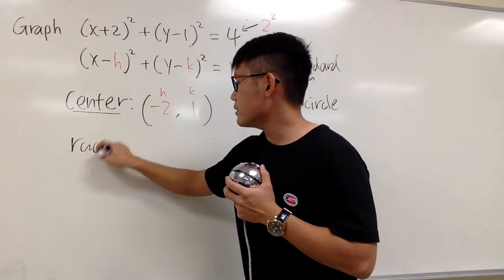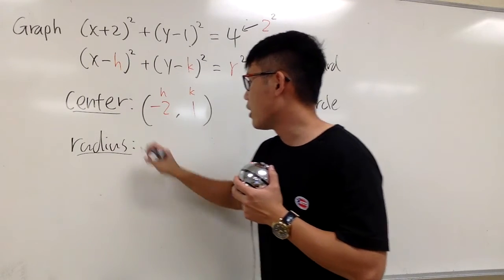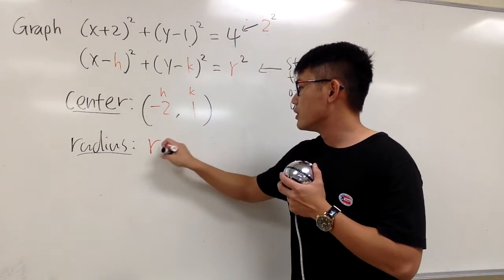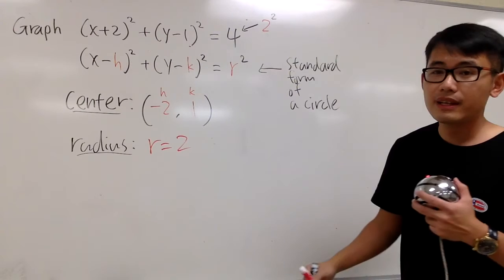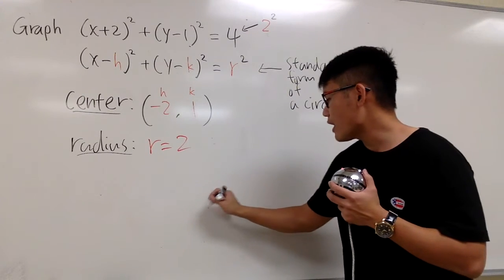And let me write this down. The r is going to be 2. And this is the information that we need, and let's go ahead and graph this.